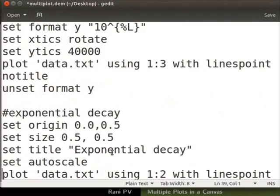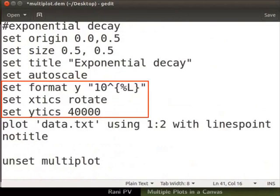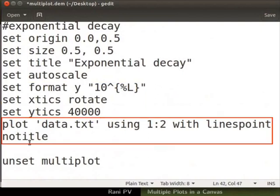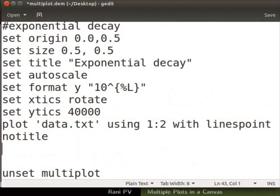Next, go to the part of the exponential decay script. I will add the same formatting commands as shown in the straight line plot. Notice that they are added before the plot command. Start a new line after the plot command and unset the format of y-axis.